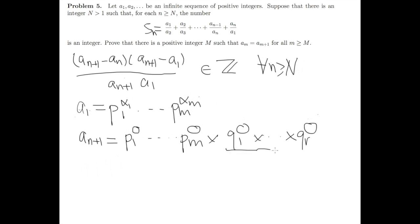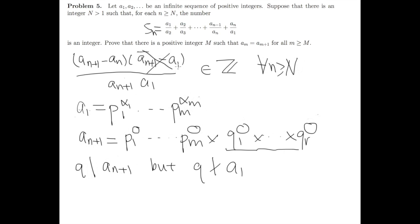Let's study first these other prime numbers. If Q is a prime which divides a_{n+1} but Q does not divide a_1, then Q does not divide a_{n+1} minus a_1. So necessarily Q must divide a_{n+1} minus a_n (since Q appears in the denominator), which means Q divides a_n.